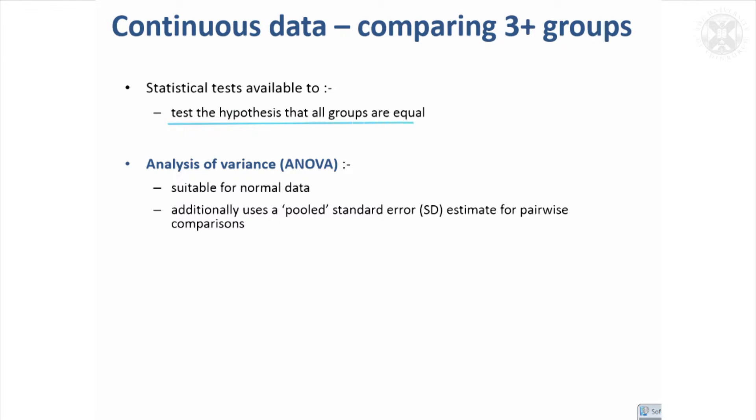A sensible hypothesis to consider is that all your groups are equal and you try to disprove that and show that no, in fact, not all the groups are equal.